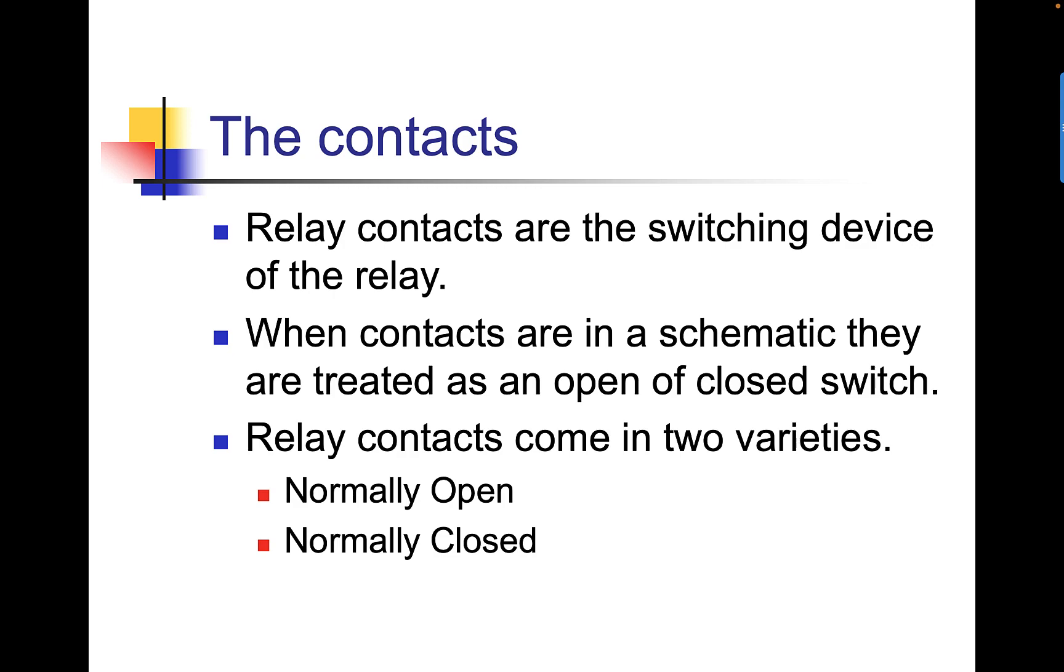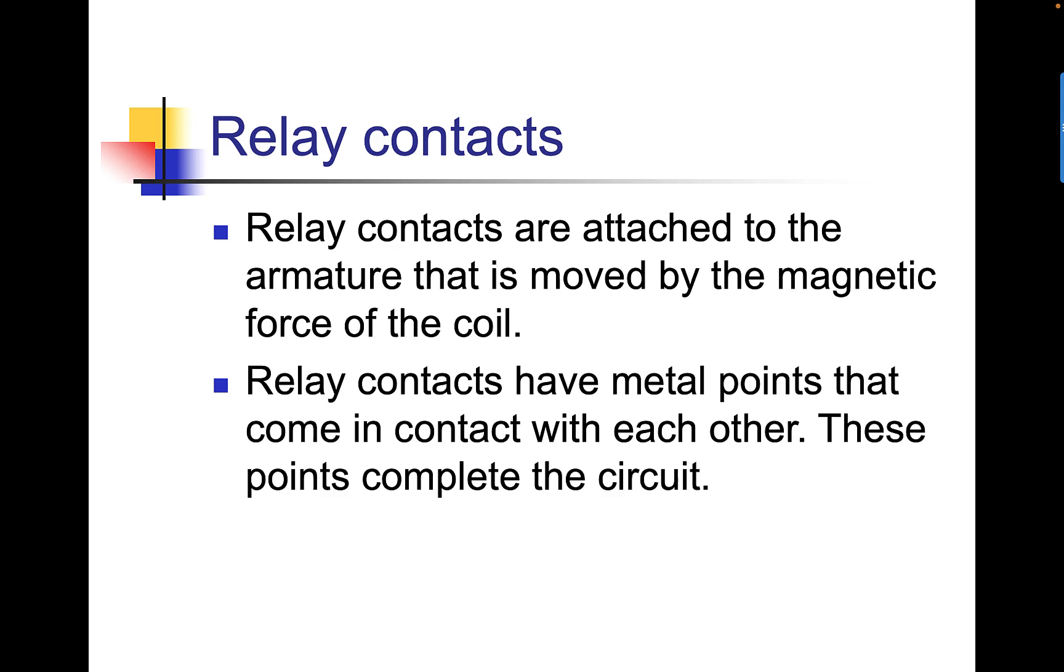When the contacts are in a schematic, they're treated as an open or closed switch. Relay contacts come in two varieties: normally open and normally closed. Relay contacts are attached to the armature that is moved by the magnetic force of the coil. The relay contacts have metal points that come in contact with each other. These points complete the circuit.